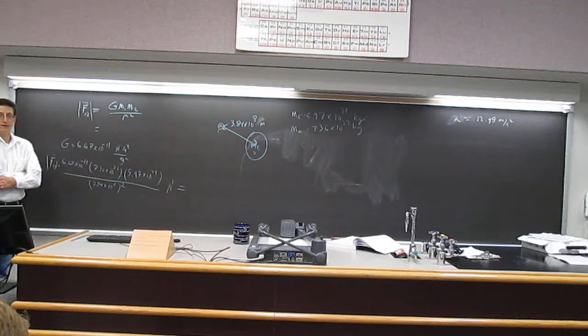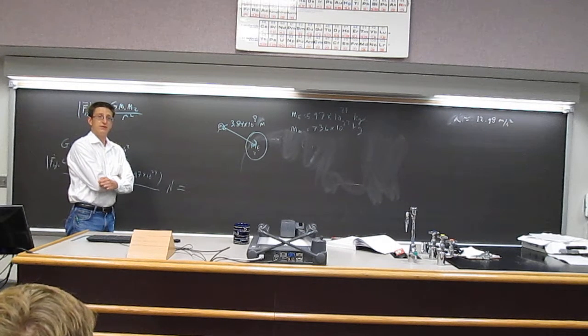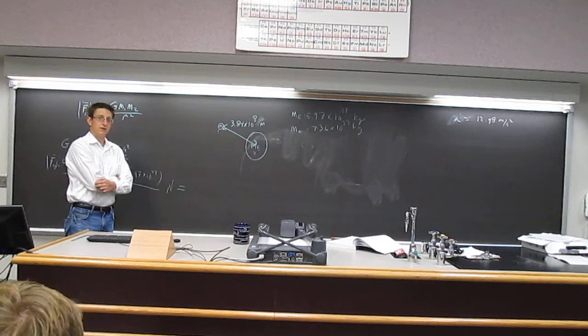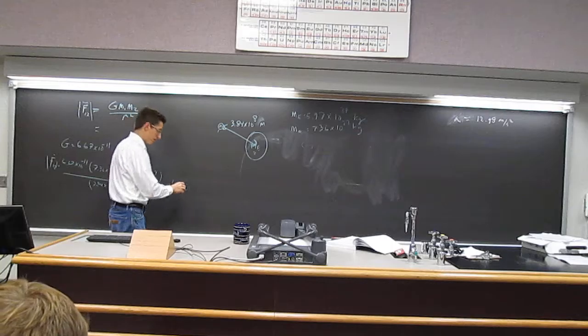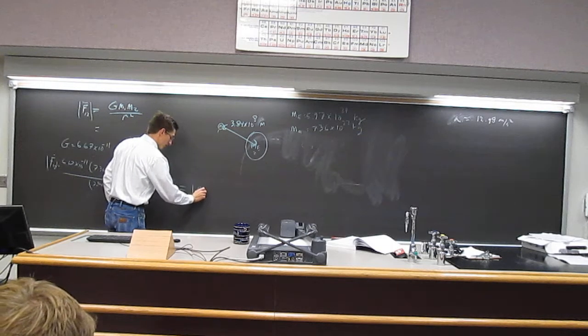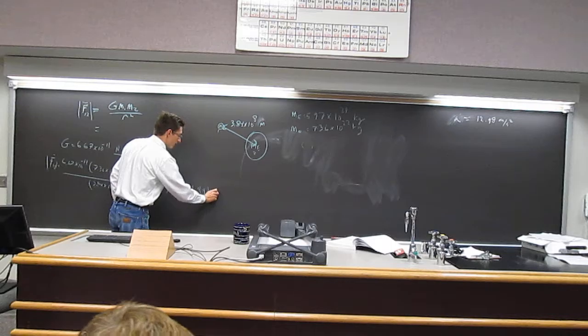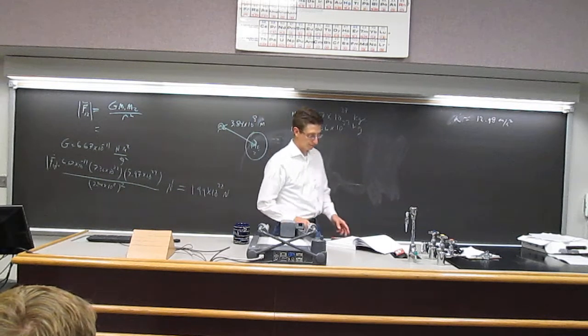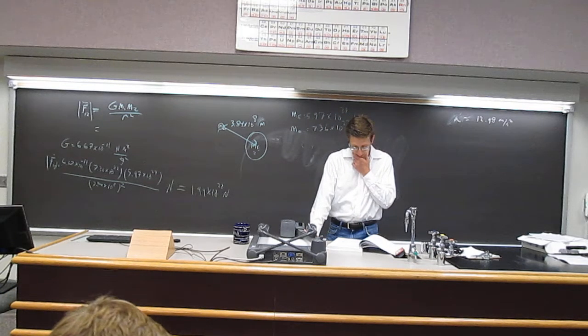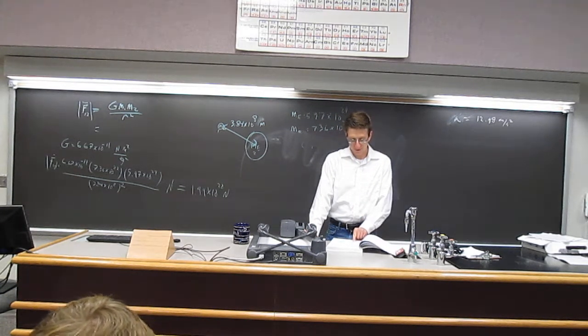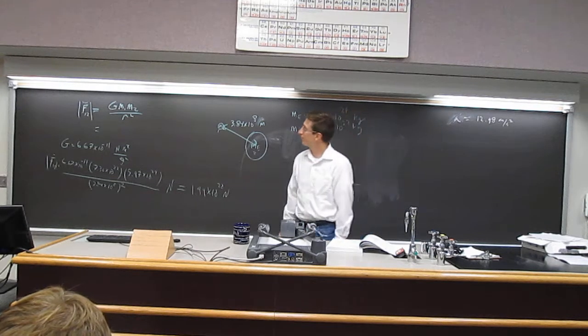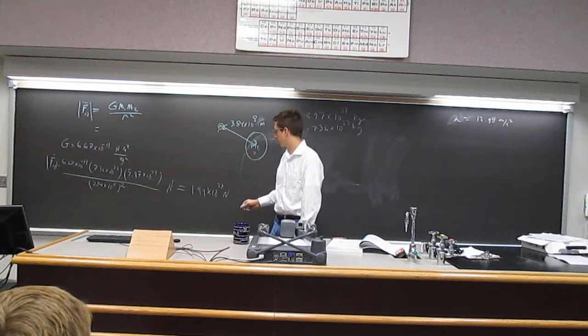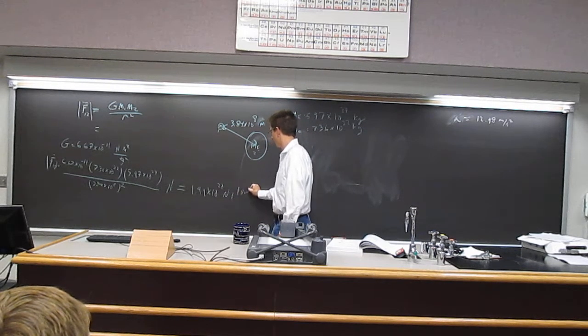And what do you get? 1.9887 times 10 to the 20th. 10 to the 20th. Is that what everyone got? And so it says what's the gravitational force, and that's not the full force, you know, the force would also have a direction.